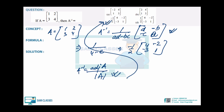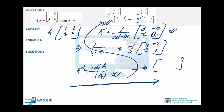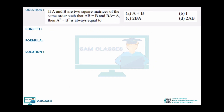Just getting the determinant value lets you check the answer quickly. Sometimes matrices look very similar with only sign differences, so check the upper option as well — they can trick you with signs.